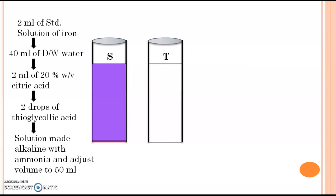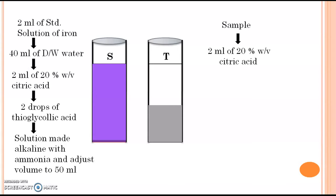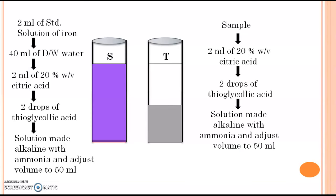Next is how to prepare the test solution. Take the sample in which you want to analyze the iron impurity. Prepare it as per the procedure given in the Indian Pharmacopoeia (IP). Then add 40 ml of water, followed by 2 ml of 20% w/v citric acid, two drops of thioglycolic acid, and make the solution alkaline by addition of ammonia. If iron impurities are present, after making the solution alkaline you will also get a purple color. Adjust the volume up to 50 ml.